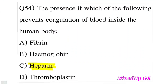Question 54: The presence of which of the following prevents coagulation of blood inside the human body? Coagulation means keeping blood in liquid form rather than clotting. Option A: Fibrin. Option B: Hemoglobin. Option C: Heparin. Option D: Thromboplastin. The answer is Option C, Heparin. Heparin prevents blood coagulation inside the human body.